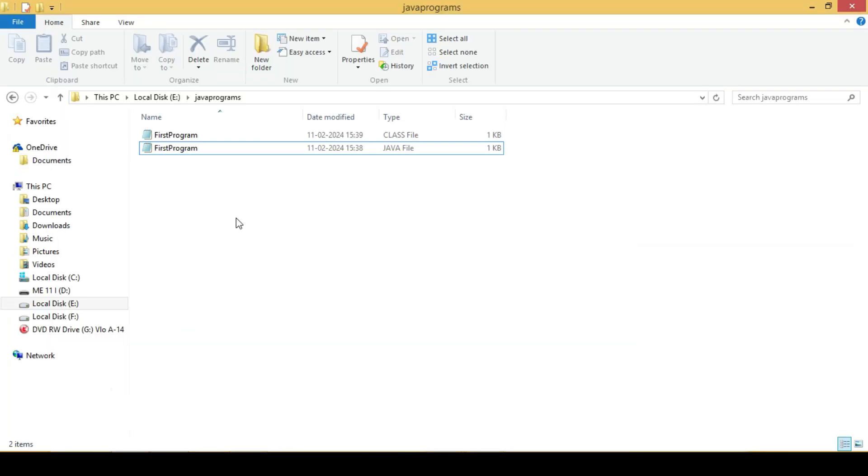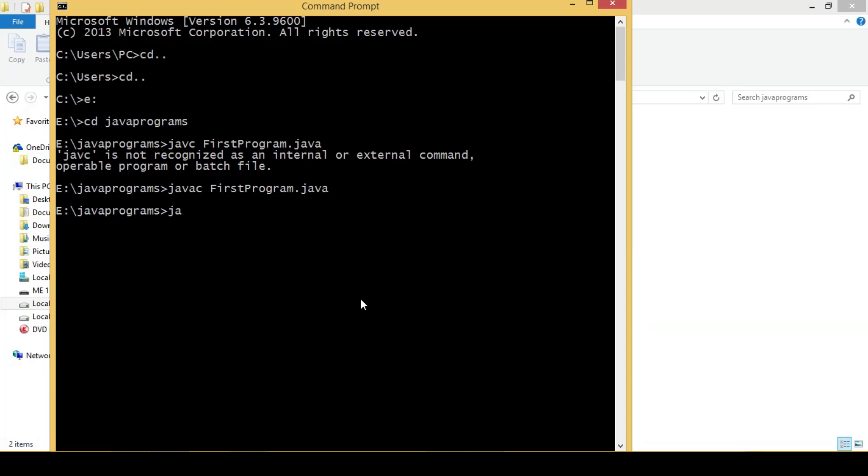So now it is compiled. Let us go to the folder and see the class file. The .class file is now created. The source code is compiled into a .class file. Now we can run the code by using the command java. We can see Hello World is printed. So it is our first program.